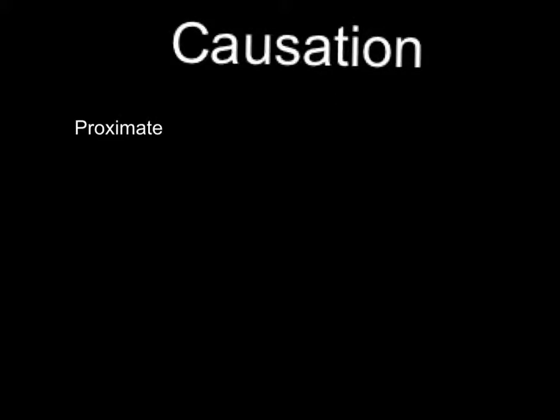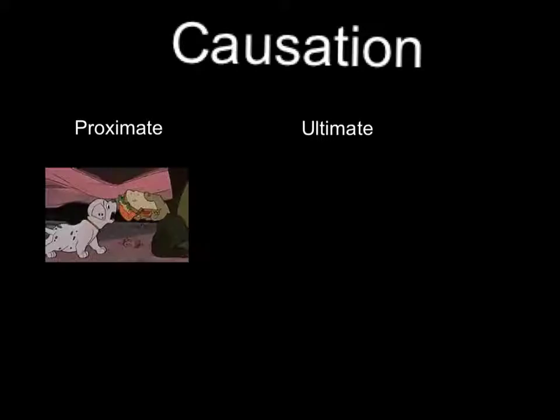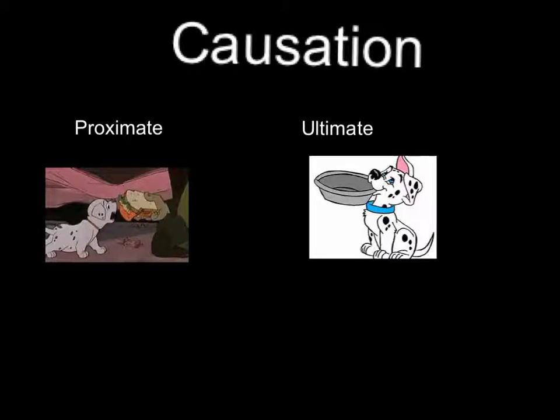Causation. There is proximate and ultimate causation. Proximate is more of the how an animal does something. For example, the environmental stimuli triggering a behavior — so the puppy is hungry, he sees a sandwich, and he wants to eat it. Ultimate is more of the why an animal does a behavior. The animal basically eats the food so he won't starve to death.